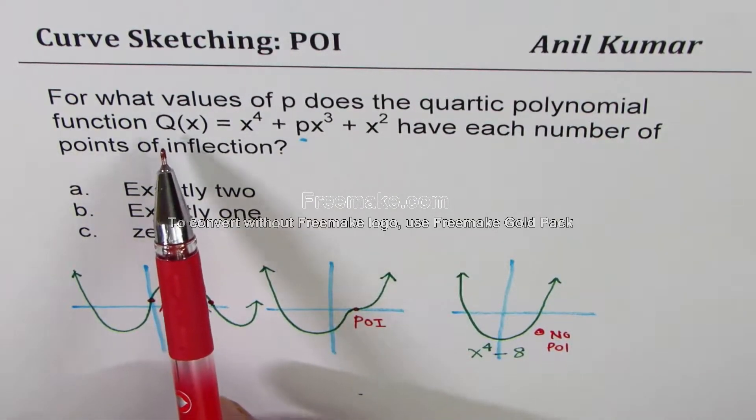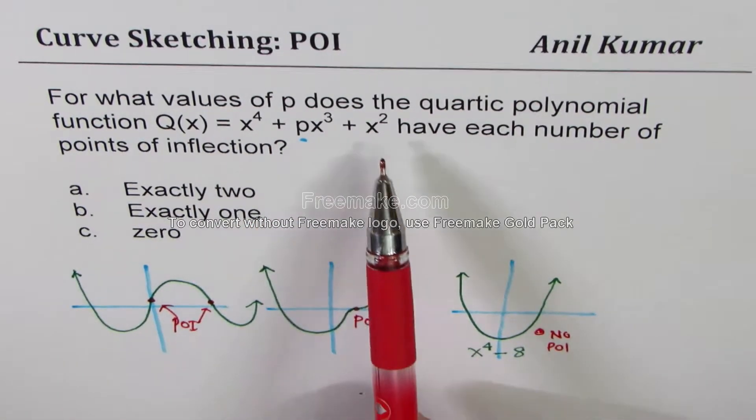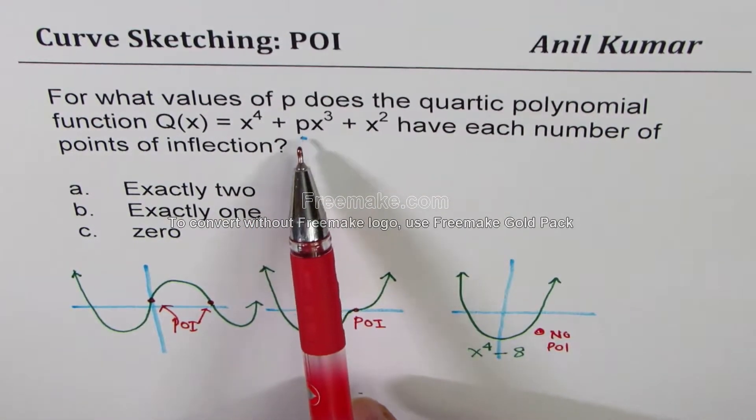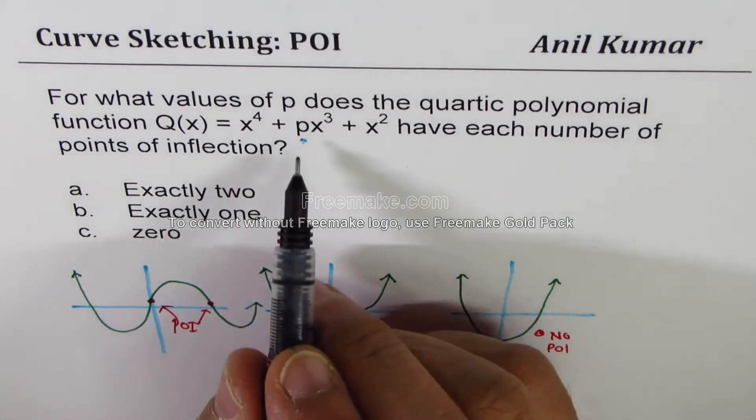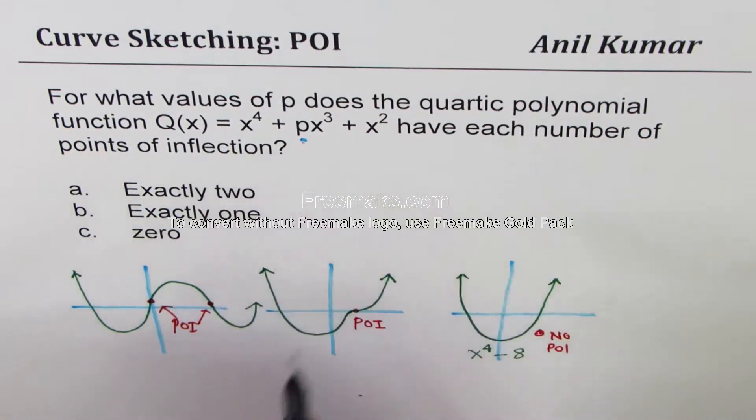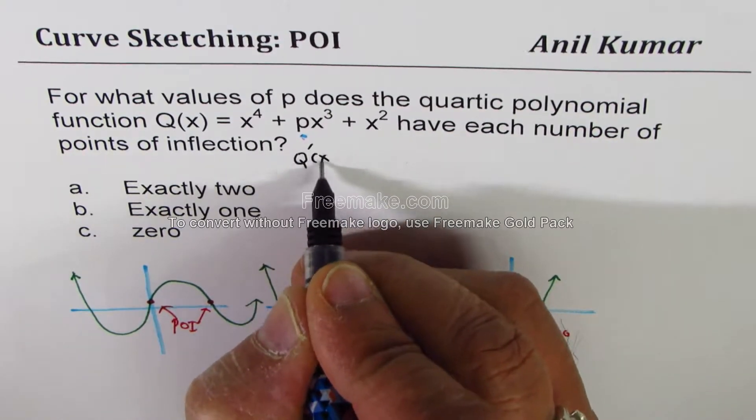So a degree of four could have any of these situations: zero point of inflection, one point of inflection, and two. Now we are given this equation Q(x) = x^4 + px^3 + x^2. We need to find the value of p for which we could have the given situation. Point of inflection is second derivative equal to zero. So let's begin with the derivative of the function.